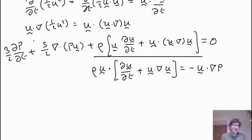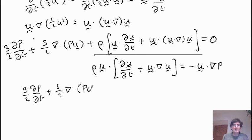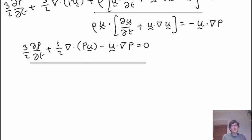You might notice this is basically work being done per unit time, because it's the velocity multiplied by a force — it's related to the work given by the fluid. So our equation becomes 3/2 dp/dt plus 5/2 divergence(pu) minus u dot grad p equals zero. This can be called the primitive form of the energy equation because it's written in terms of pressure.